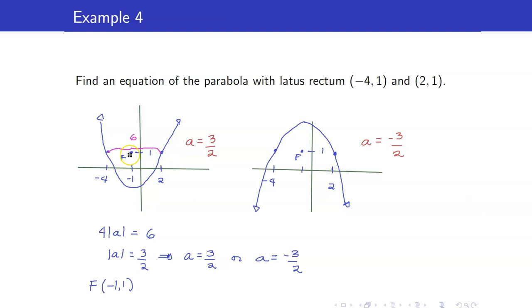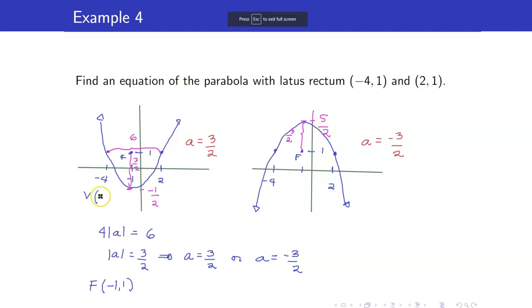Now that we have our focus, we can get our vertex. The focus and the vertex are just a units away from each other. If a equals 3 halves, we go down by 3 halves units from y equals 1, giving y coordinate 1 minus 3 halves equals negative 1 half. For the other case, it's 1 plus 3 halves equals 5 halves. So for the first case, the vertex is (negative 1, negative 1 half), and for the second case, the vertex is (negative 1, 5 halves).